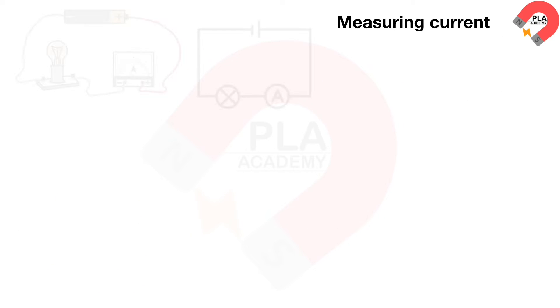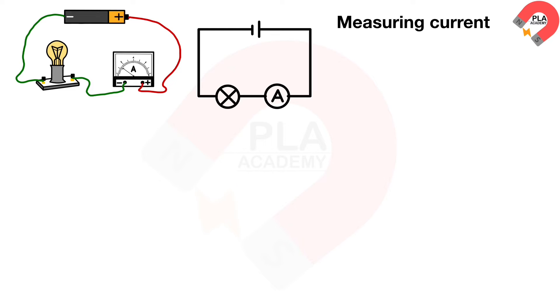Measuring current: A simple circuit is shown on the diagram. This is a cell. Longest side is indicated a positive, shortest side is indicated a negative.